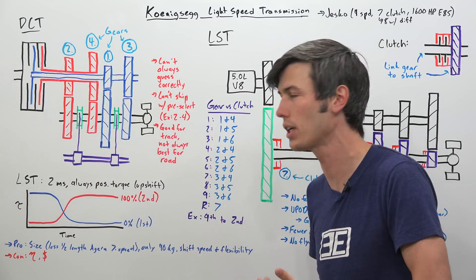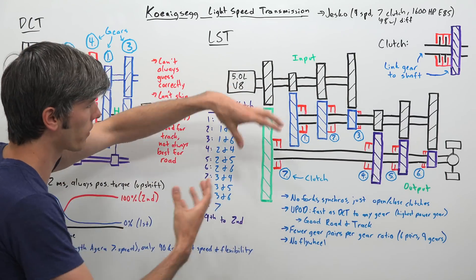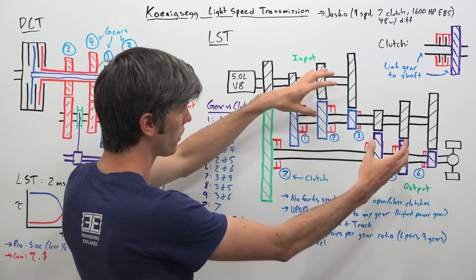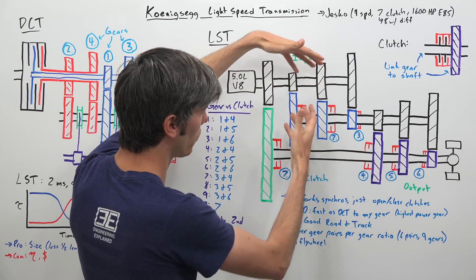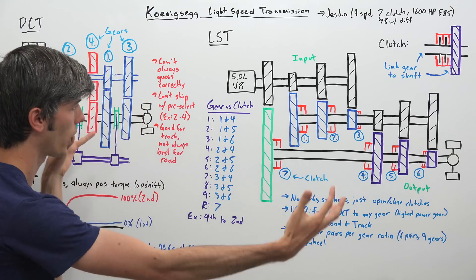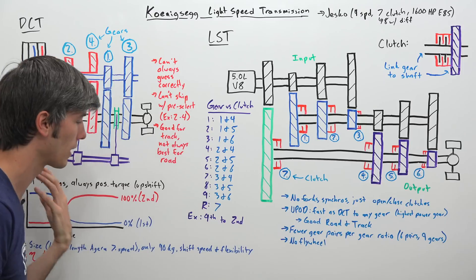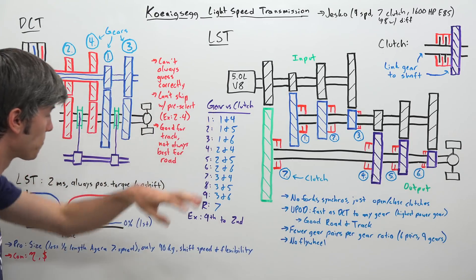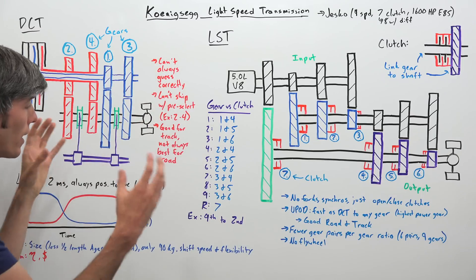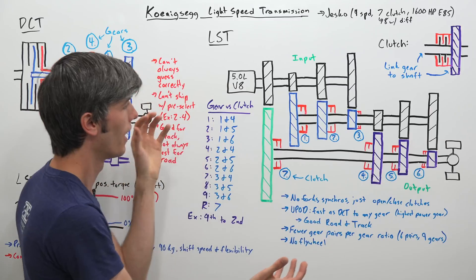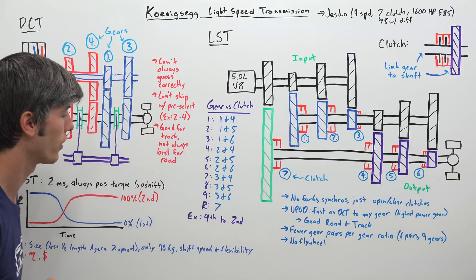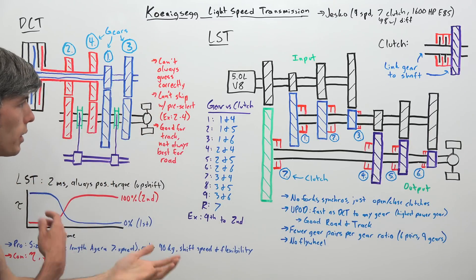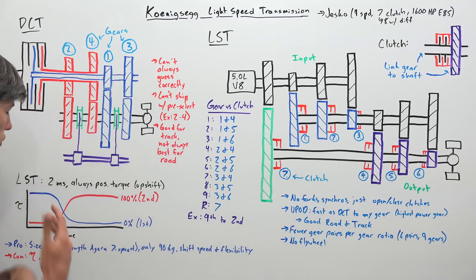Some of the other advantages of this transmission, of course, the size of it. So this is part of kind of these compound gears. Instead of using nine gear pairs for nine gears, they're using just six gear pairs and three shafts and then six gear pairs giving you those nine gear ratios. So they're able to make it significantly smaller. In fact, Koenigsegg claims that this is less than half the length of the seven speed transmission used in the Agera and it only weighs 90 kilograms. So that's with all the fluids. So very compact, so small in nature and also not that heavy. So very cool. And then, of course, the other obvious advantages of the shift speed and the shift flexibility, being able to go from any one gear to any other gear extremely fast.